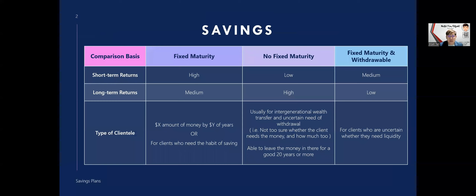So for savings plans, how do we compare across the three different types? In endowments alone, we have fixed maturity and no fixed maturity. For fixed maturity, you put in 10 years and you must withdraw in 10 years time. Whereas for no fixed maturity, after 10 years you can still leave your money inside, and usually that's where the yield gets higher.